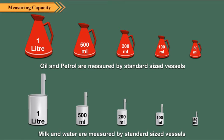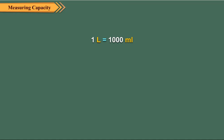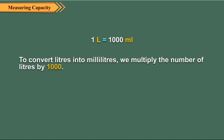Children, now let us find the relation between liter and milliliter. One liter has 1000 milliliters. To convert liters into milliliters, we multiply the number of liters by 1000.